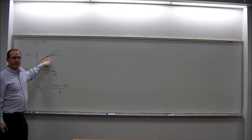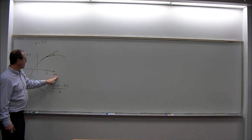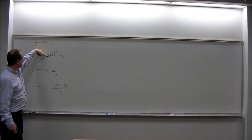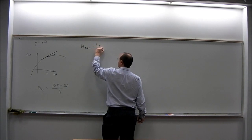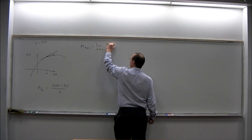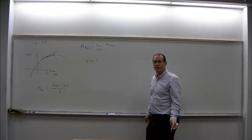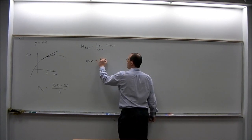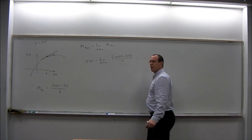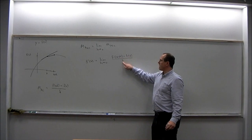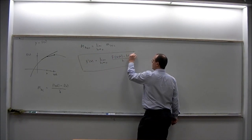The main point is that we can use the slope of the secant line with ever-diminishing values of h to obtain the slope of the tangent line. So the slope of the tangent line is the limit as h approaches zero of the slope of the secant line. The slope of the tangent line is given by f prime of x, the derivative of f of x, and that equals the limit as h approaches zero of f of x plus h minus f of x, divided by h. This is the difference quotient — a rise over run expression. This is the definition of the derivative.